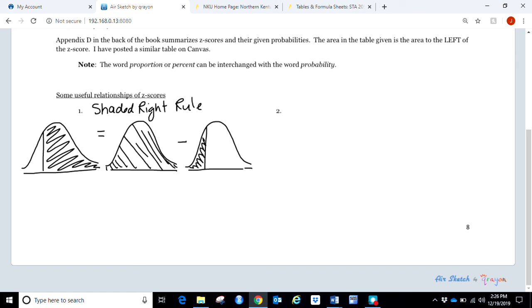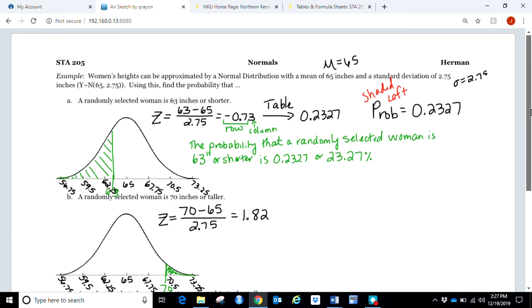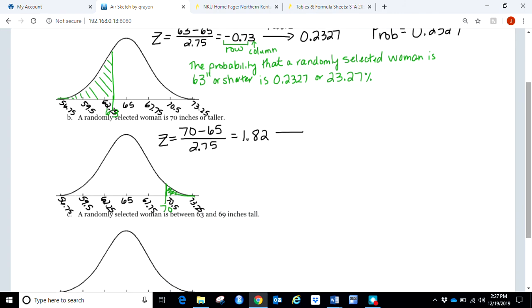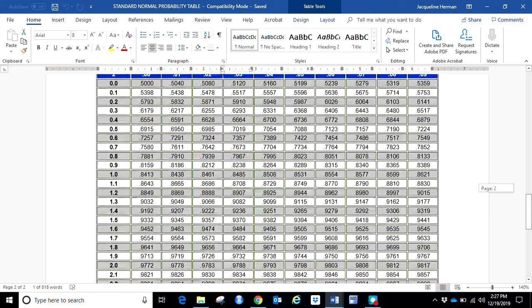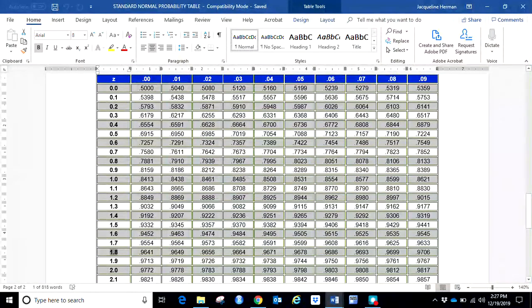So what we're going to end up doing mathematically is taking one minus whatever value we get from the table. Let's see how that works with our problem here. We were wanting to find the 70 inches or taller. So what I'm first going to do is take this number to the table. Again, remember the first up to the first decimal point tells me the row that we're going to, and that second decimal point will tell me the column we're going to. So we're looking for a positive 1.82. So here's our 1.8 row, the 0.02 column, and those line up at 0.9656.